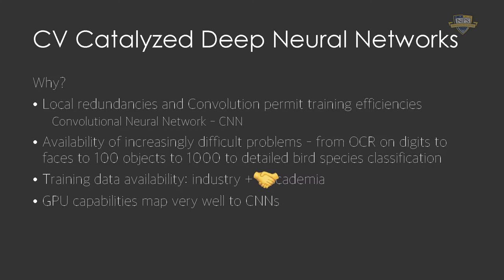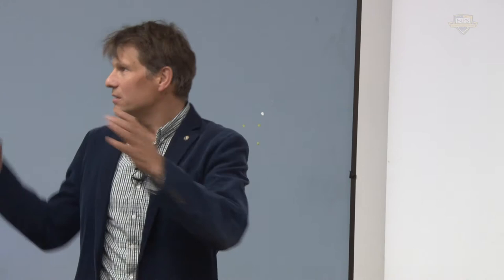I want to come back to my hypothesis that computer vision really catalyzed the recent research and interest in artificial intelligence, particularly for deep neural networks. The convolutions are important because they reduce the feature space tremendously and make learning feasible. A big factor is also that in computer vision we have ready availability of increasingly difficult problems: recognizing digits is fairly straightforward; detecting faces is harder; recognizing a particular face is even harder. This progression really helped propel the science forward.